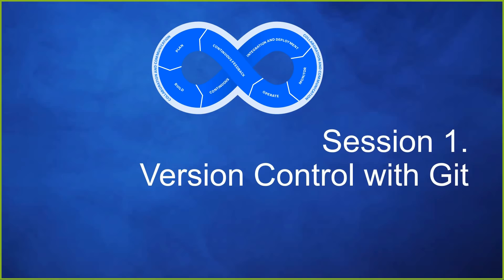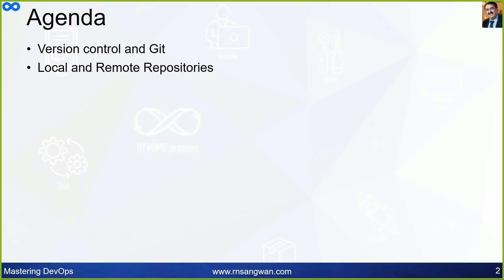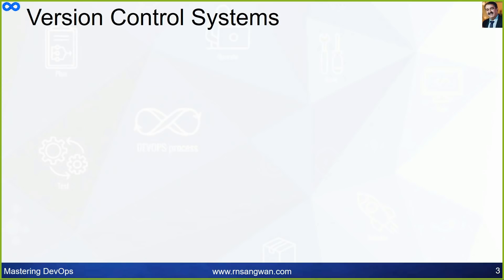Session 1: Version Control with Git. The session agenda covers: version control and git, local and remote repositories, what they are, installing git on our local Linux machine, initializing a git repository, and git log.